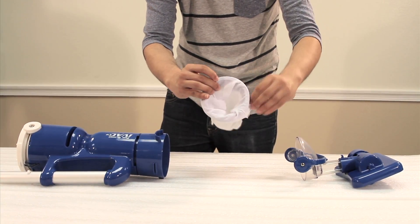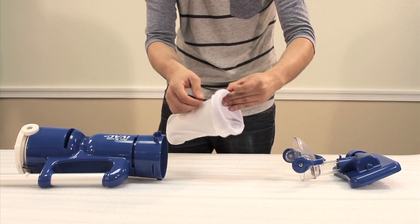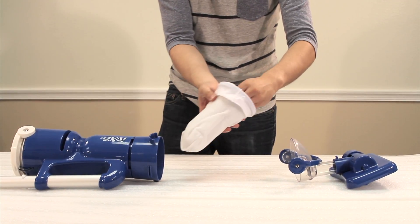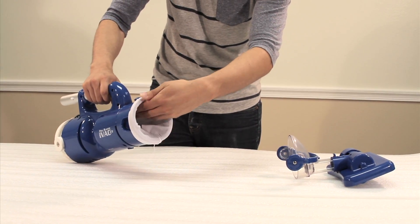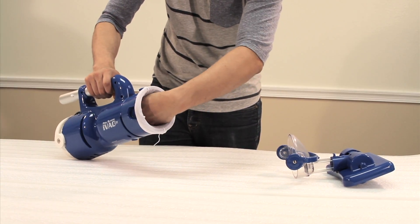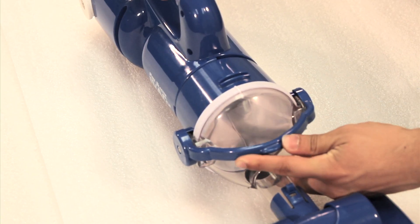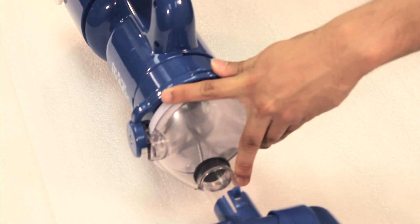Then reinstall the extreme filter bag into the IVAC C2. Make sure the filter is seated correctly. Then reinstall the nose cone and the VAC head by locking the handle in place.